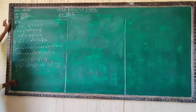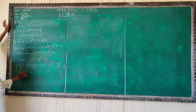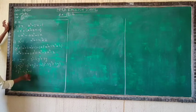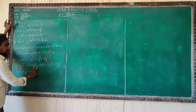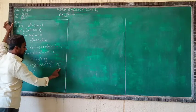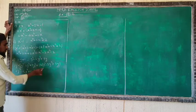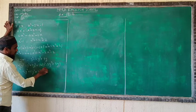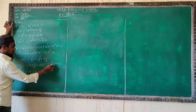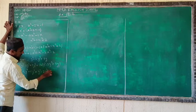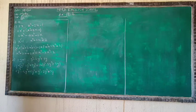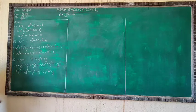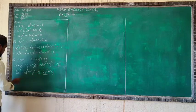Multiply 2y by y²: power addition gives 2 plus 1, you get y³. Then 2y times -2y³ gives -4y⁴. Then 2y times 3y gives 6y². Now multiply 1 by y²: you get y². Then 1 times -2y³ gives -2y³, and 1 times 3y gives 3y. Now like terms: plus 2y³ and minus 2y³.